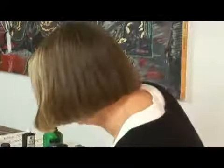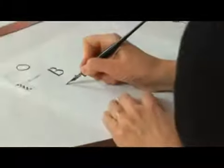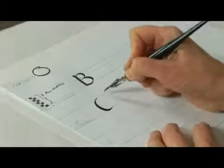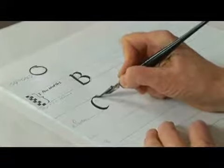We'll begin with a basic oval shape. We're working in the eight pen width area, so we're using the capital height, and we're going to make an oval in two strokes.